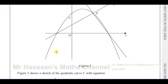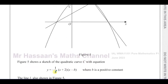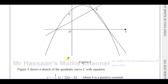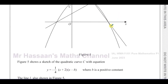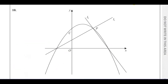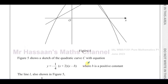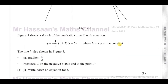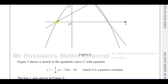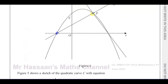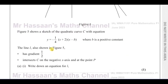So this question says: figure 5 shows a sketch of the quadratic curve C with the equation y equals negative one-quarter times (x + 2)(x − b), where b is a positive constant. The line L1 is also shown, and it has a gradient of one-half. The line also intersects C on the negative x-axis, and also at the point P.